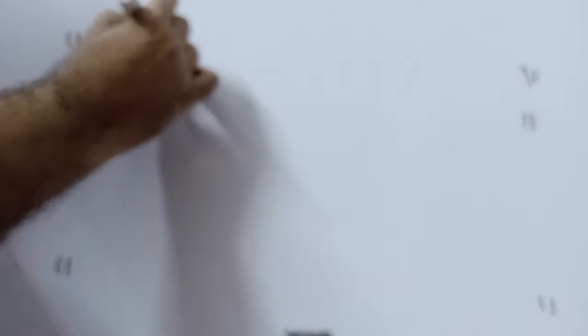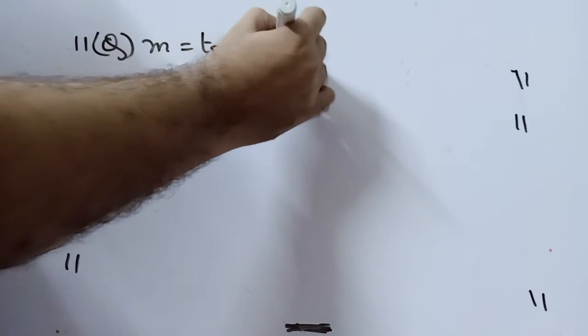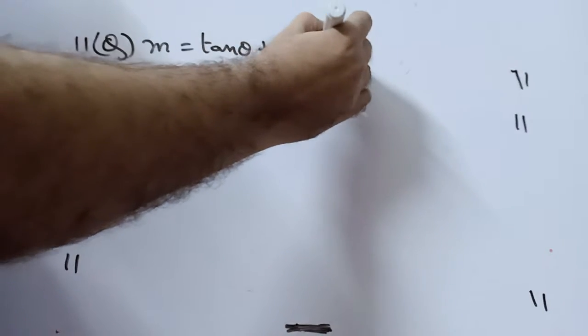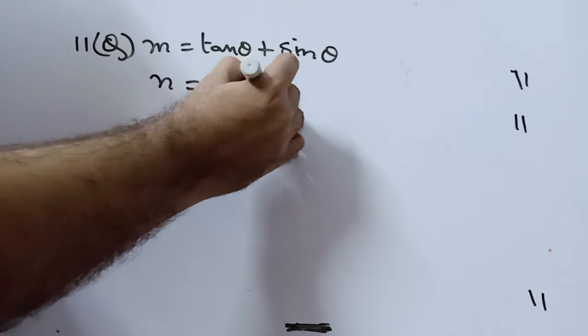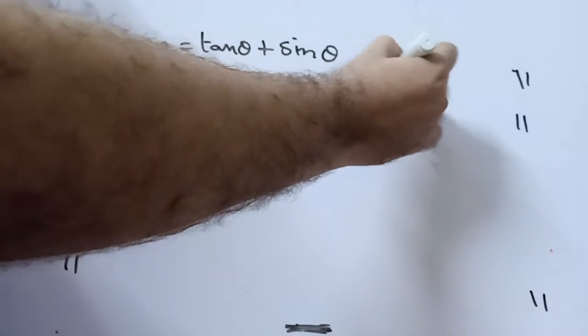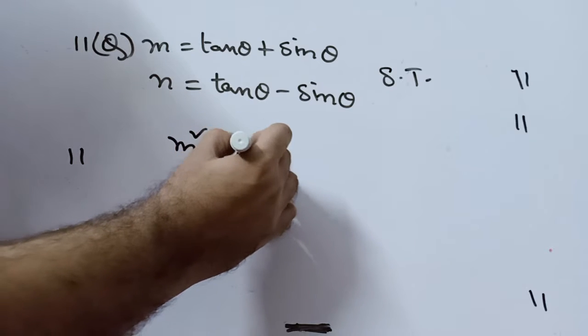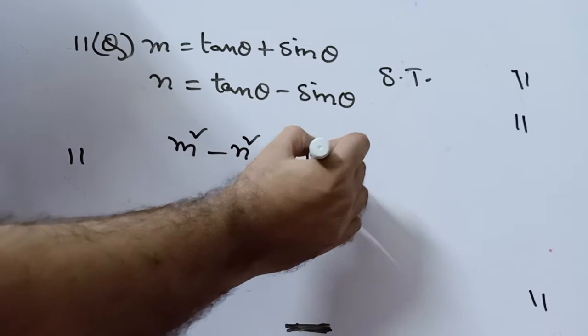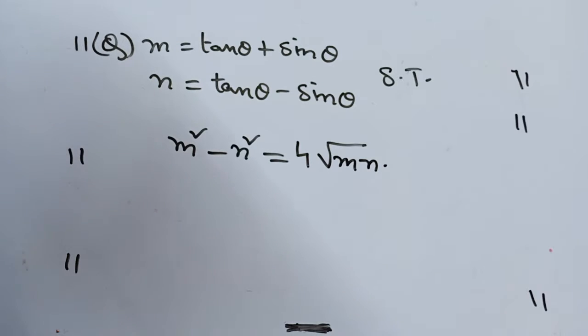M is equal to tan theta plus sin theta, and n is equal to tan theta minus sin theta. Show that m square minus n square is equal to 4 root mn. This is the problem, very important.